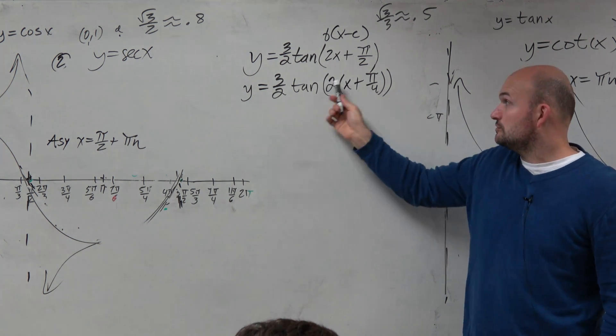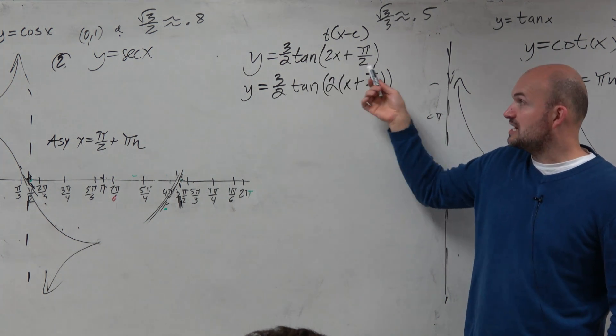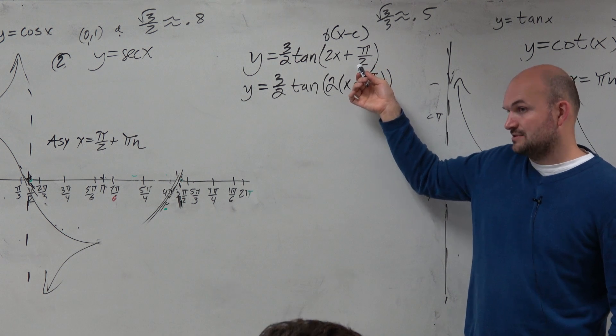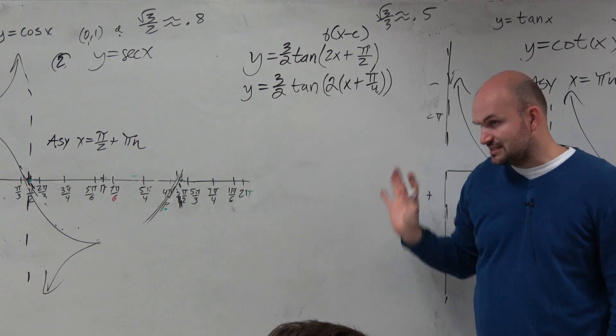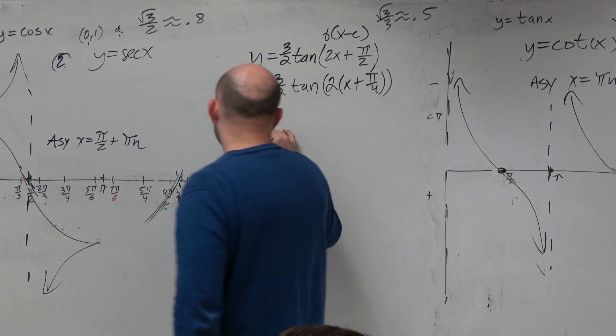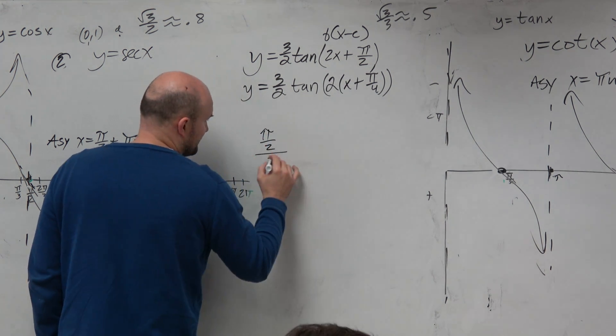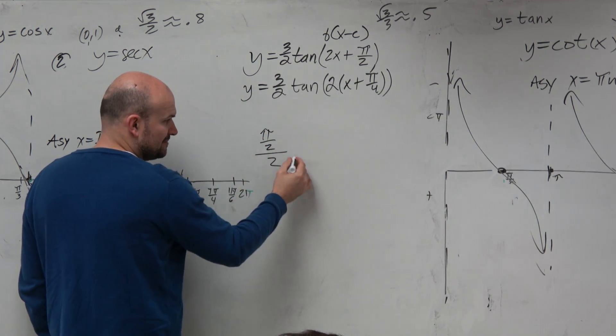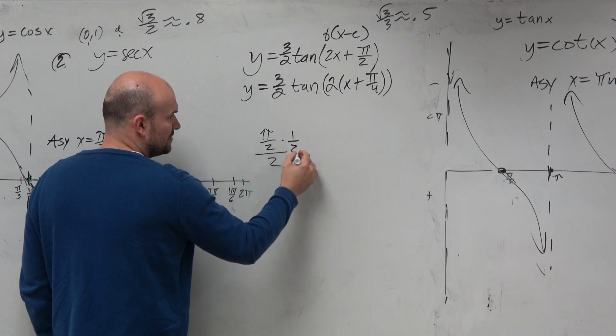Check your work. 2 times x is 2x. 2 times pi over 4 is pi halves. When you factor out the 2, it's like dividing out of 2. Pi halves divided by 2. Dividing by 2 is the same thing as multiplying by the reciprocal, right?